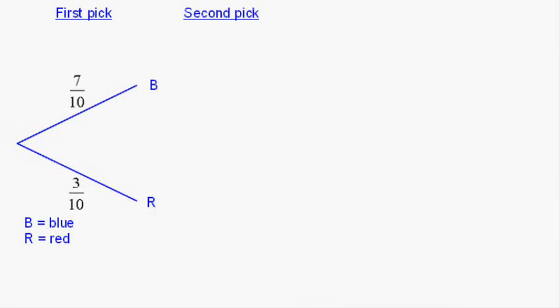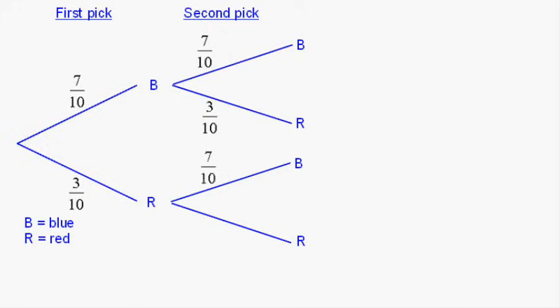Now, what about the second pick? Well, she has replaced whatever she picked first time, so we've got exactly the same situation in the bag as we started with. So, she picks a blue first, then she's still got the same probabilities of picking a blue or a red second time. And if she picks a red first, it's exactly the same again. So, those are the probabilities for her tree diagram.